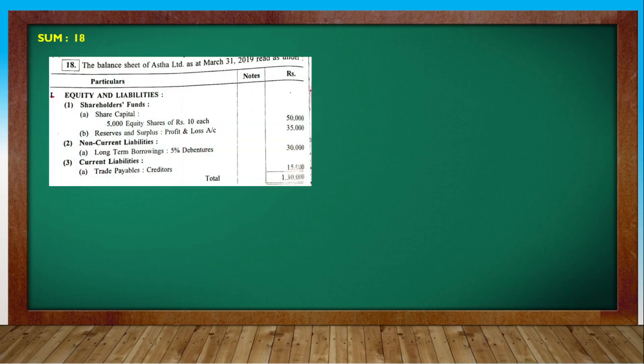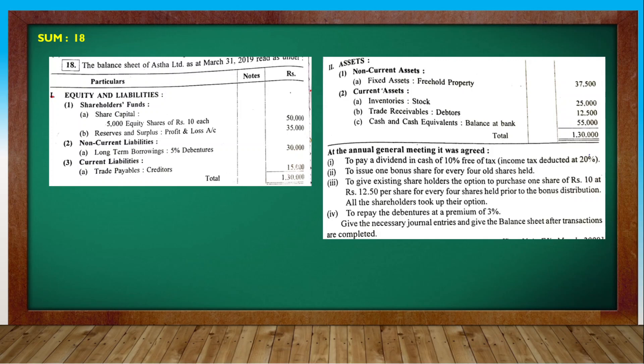Let's look at a practical question - question number 18. Balance Sheet of Astha Limited as on 31st March 2019, under Equity and Liabilities: Share Capital of ₹10 each, Reserves and Surplus including Profit and Loss Account, Debentures. The key Capital and Reserves figures need to be noted. Additional information: at the Annual General Meeting, it was agreed - number one is to pay a dividend of 10% free of tax, and the tax rate is 20%.